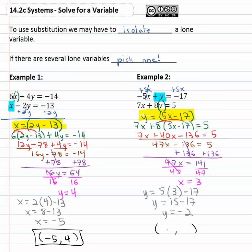So as an ordered pair, x comma y, our solution is three comma negative two.